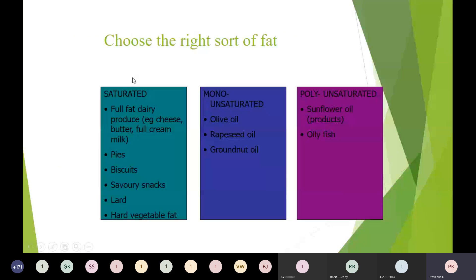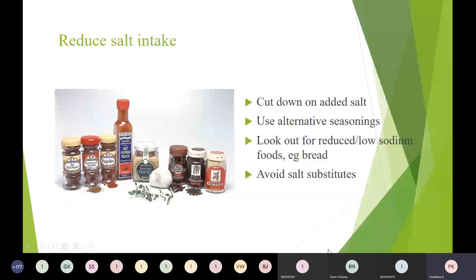The patient should choose the right sort of fat. Saturated fat foods like butter, cheese, biscuits, and chips should be reduced. Monounsaturated fat — preferred — is rich in olive oil, rapeseed oil, and groundnut oil. Polyunsaturated fat is rich in sunflower oil. He should make use of these vegetable oils more, but reduce intake in the form of saturated fat. He also needs to reduce salt intake, use alternative seasonings, and avoid salt substitutes.